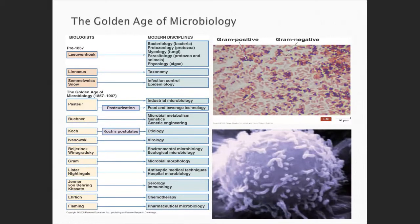Looking at the chart of microbiology disciplines: Semmelweis and Snow with infection control and epidemiology; Linnaeus with taxonomy; Pasteur with pasteurization leading to food, beverage, and industrial microbiology; microbial metabolism, genetics, and genetic engineering. Robert Koch with etiology — the study of causation — plus virology, environmental microbiology, and ecological microbiology. Microbial morphology with Dr. Gram, who has the Gram stain named after him. Lister and Nightingale for antiseptic medical techniques and handwashing. Jenner for serology and immunology. Ehrlich with chemotherapy.